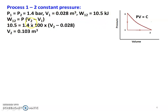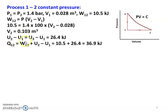Work done for constant pressure process W12 equals P into (V2 minus V1). Substituting: 10.5 equal to 1.4 into 100 multiplied by (V2 minus 0.028). Calculating, V2 equal to 0.103 meter cube. Since U2 equal to U3, we have U2 minus U1 equal to U3 minus U1. Therefore U3 minus U1 equal to 26.4 kilojoules.